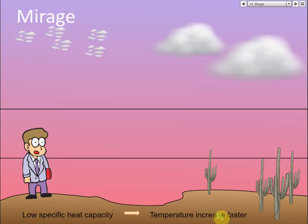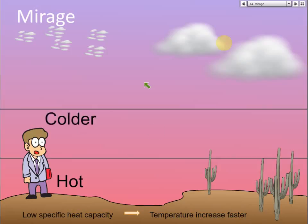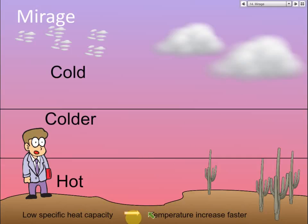You need to know how to explain this because in an exam this may come out in essay questions — they may ask you to explain it. When exposed to sunlight, because the ground has low specific heat capacity, the temperature of the ground increases faster than the air. The ground is very hot, the air above is colder, and the upper side is the coldest. The air near the ground is also hot because the ground heats the air after absorbing heat.